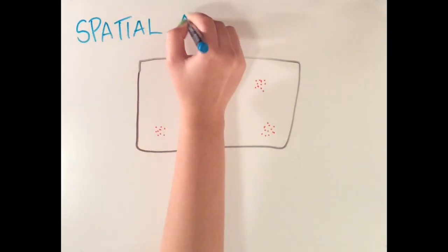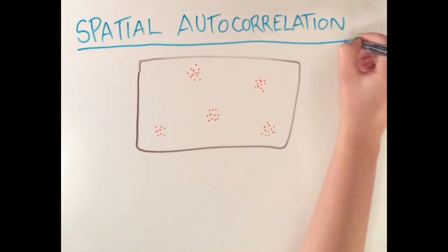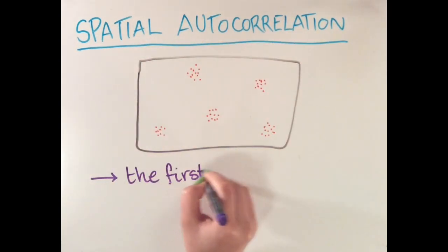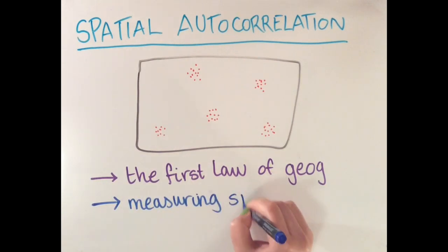This video is about spatial autocorrelation. It will cover the first law of geography and ways of measuring spatial autocorrelation.